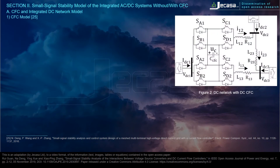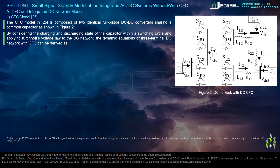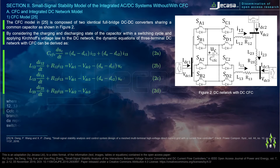The CFC model in reference 25 is composed of two identical full-bridge DC-DC converters sharing a common capacitor, as shown in Figure 2. By considering the charging and discharging state of the capacitor within a switching cycle and applying Kirchhoff's voltage law to the DC network, the dynamic equations of the 3-terminal DC network with CFC can be derived.